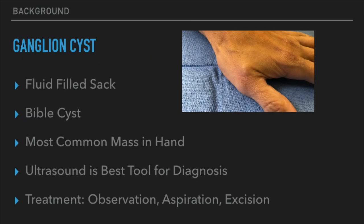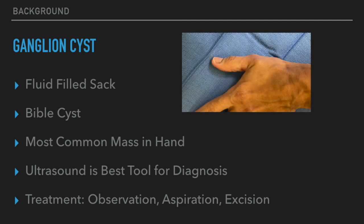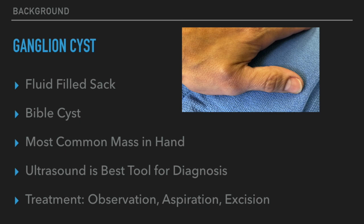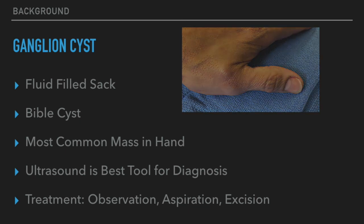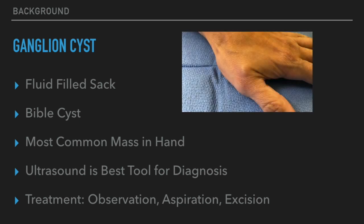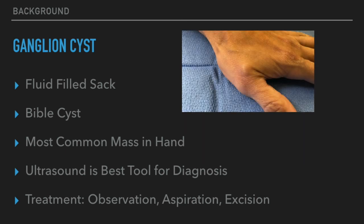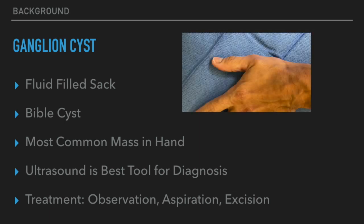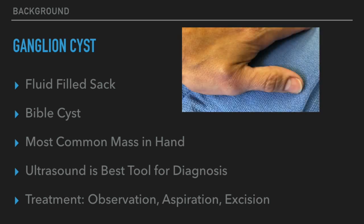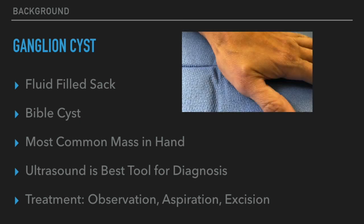Here's some background on ganglion cysts. Ganglion cysts are basically a fluid-filled sack. They had in the past a name called Bible cysts, because people used to hit them with a Bible to break them. They are the most common mass in the hand, and ultrasound is probably the best tool for diagnosis. However, MRI and CT can be used. Treatments include just observation, aspiration, and excision. In this video we're going to show you an aspiration and how it's performed for a cyst in the hand.